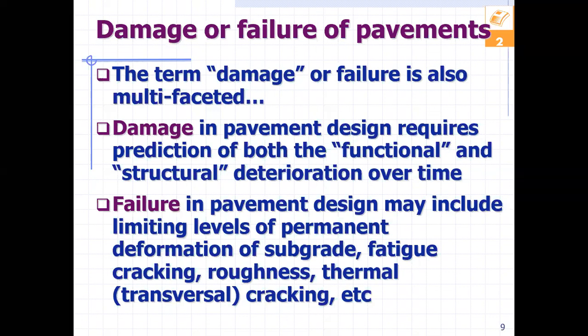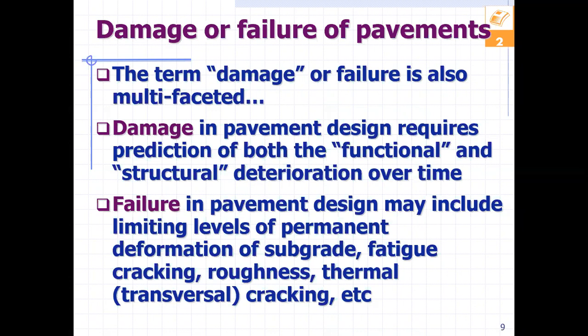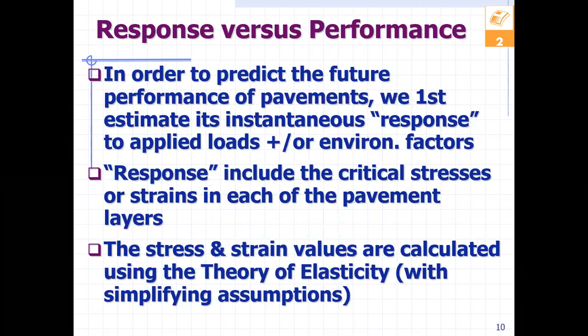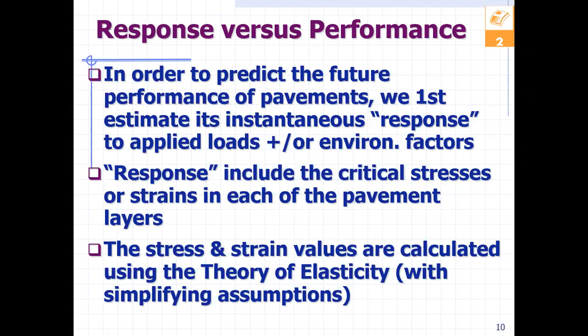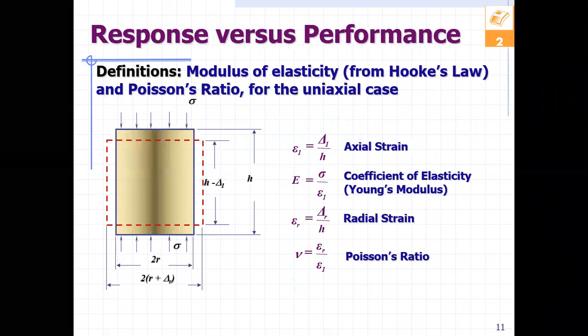Pavement failure includes limiting levels of permanent deformation we can tolerate. When we go beyond a certain point — say 20% cracking on the surface or 13 mm of rutting — we estimate that the pavement has reached end of life and has failed. To predict future performance, we estimate the instantaneous response and then use deterministic and empirical approaches to accumulate that into permanent deformation, estimating critical stresses or strains.